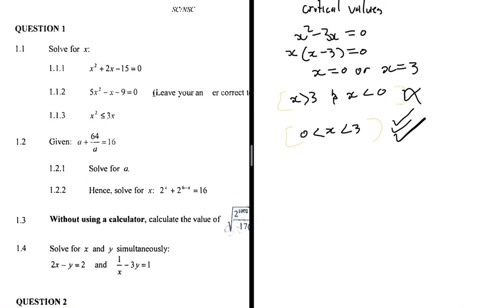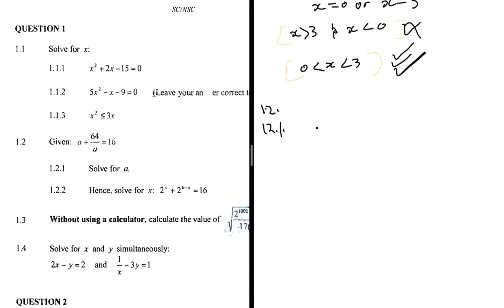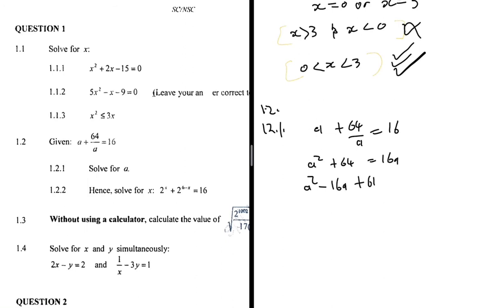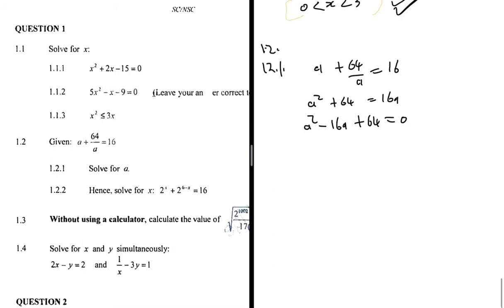Problem 1.2.1: solve for a given a + 64/a = 16. I don't like dealing with fractions, so I multiply everything by a, giving a² + 64 = 16a. Rearranging: a² - 16a + 64 = 0.